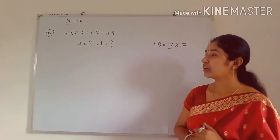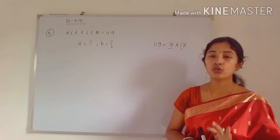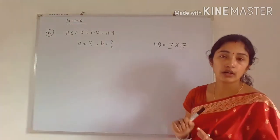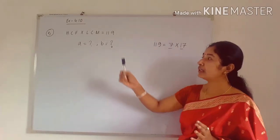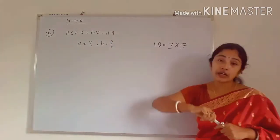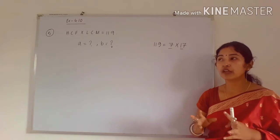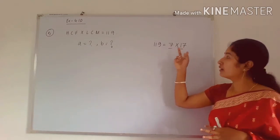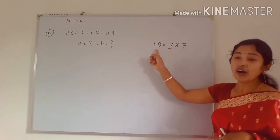In question 5, the product of HCF and LCM is given as 119 and you have to find the two numbers. It is also given that the two numbers are not equal to 1 — both A ≠ 1 and B ≠ 1. To solve this, first find the prime factorization of 119, so we can identify which numbers multiply together to give 119.